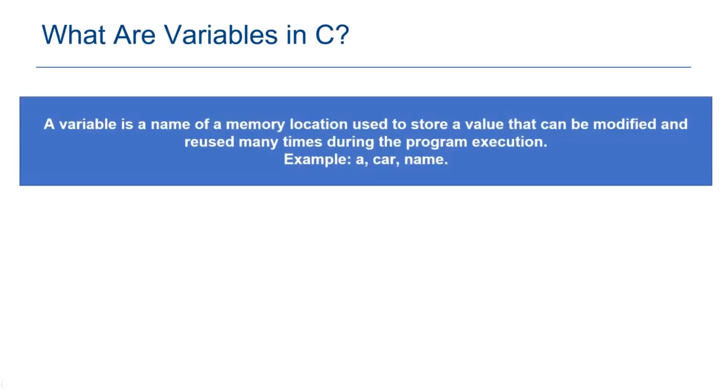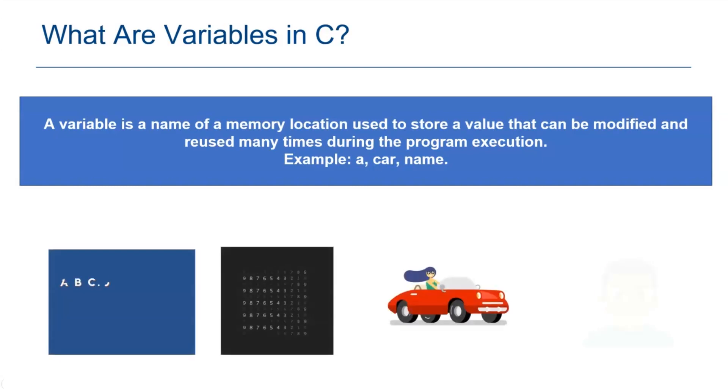What are variables in C? A variable is a user defined or user readable custom name assigned to a memory location. It is used to hold a value that can be modified and reused many times during program execution. A variable name can be an alphabet or digits and can also start with an underscore. But a variable name cannot be a keyword. They are set of words reserved for specific functionalities in C.